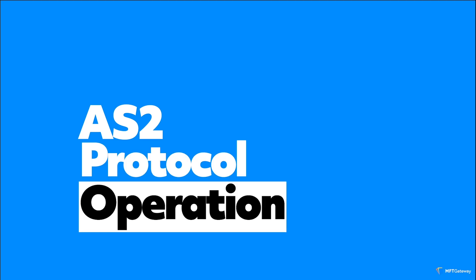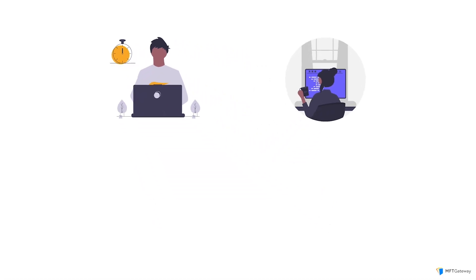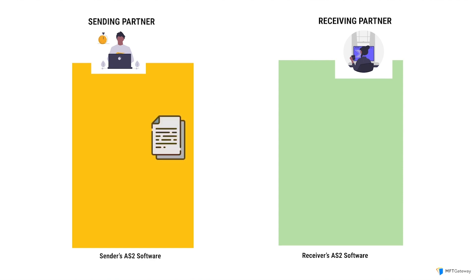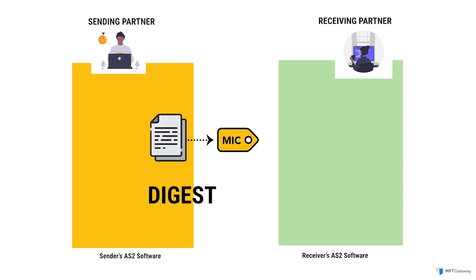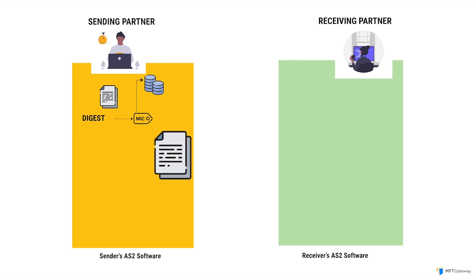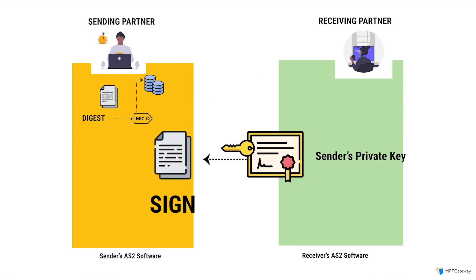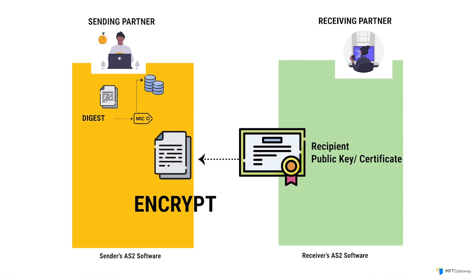AS2 protocol operation: When examining the operation of the AS2 protocol, the process begins with the input file being digitally hashed to create a message integrity check. Subsequently, it is signed by the sender's private key and encrypted using the recipient's public key.